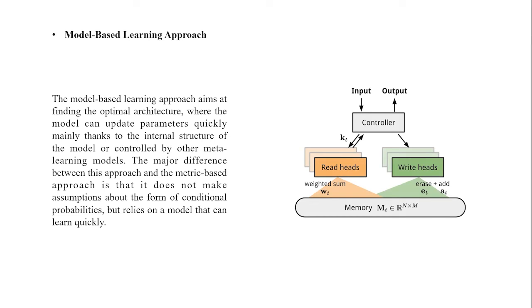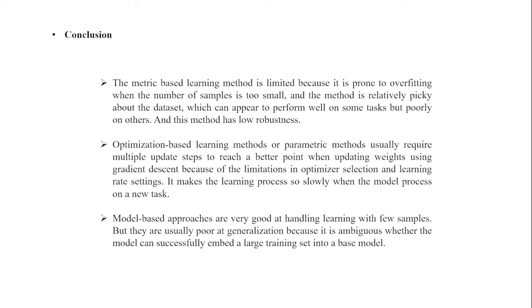The model-based learning approach aims to find the optimal architecture where the model can update parameters quickly, mainly thanks to the internal structure of the model or controlled by other meta-learning models. The major difference between this approach and metric-based approach is that it does not make assumptions about the form of conditional probabilities, but relies on a model that can learn quickly. So, in this paper, we summarize and analyze the classical methods of few-shot learning from different perspectives by comparing the latest research.